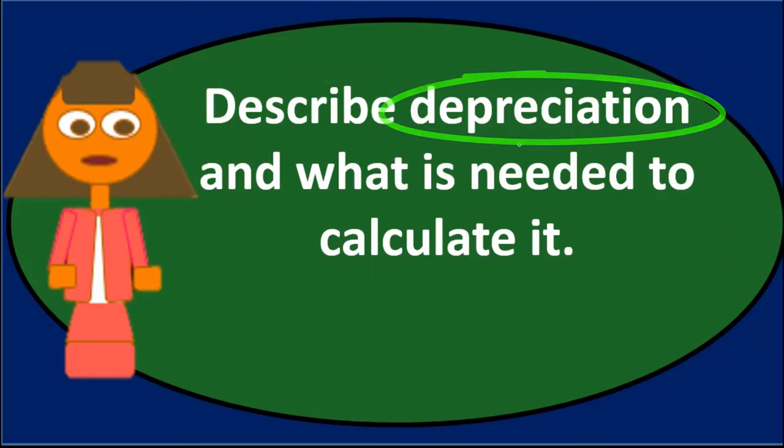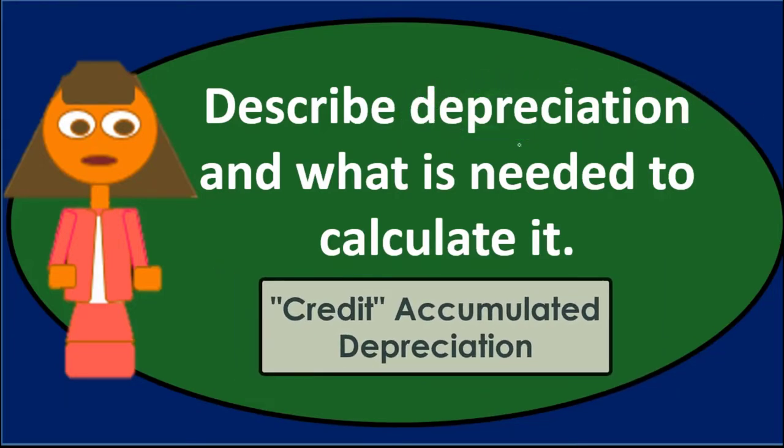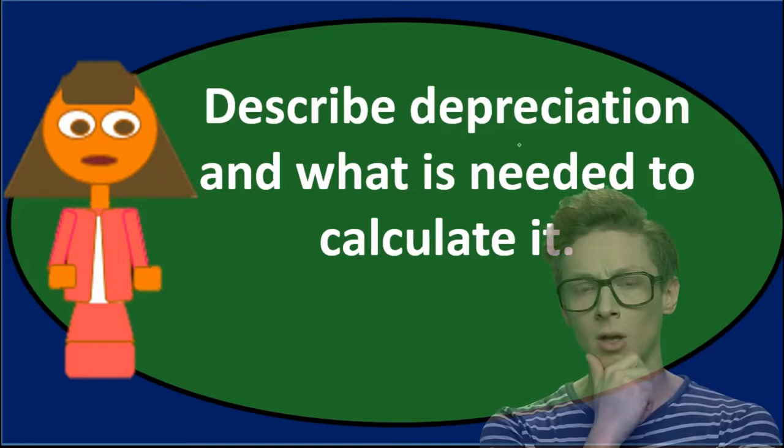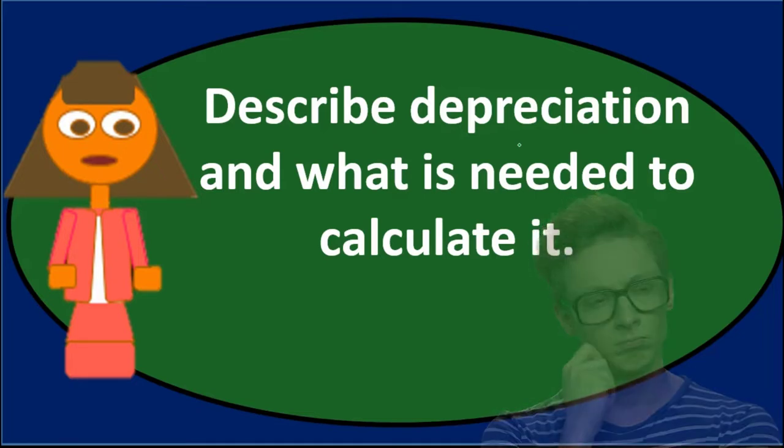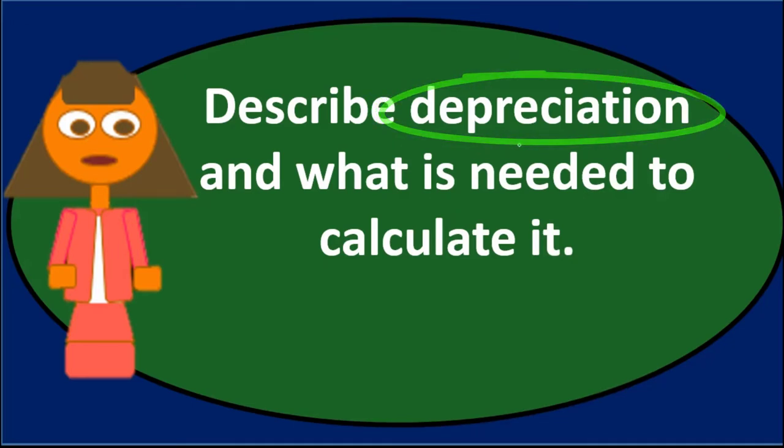Depreciation, the journal entry for is: debit depreciation expense, credit accumulated depreciation. We pretty much just want to memorize that, and then you can think through what is that doing. Depreciation expense is an expense account which is going to increase the expense with a debit.